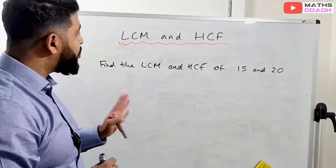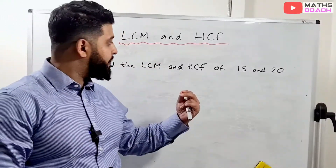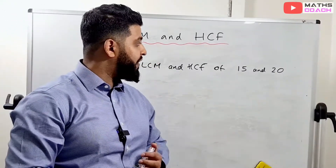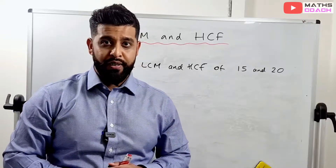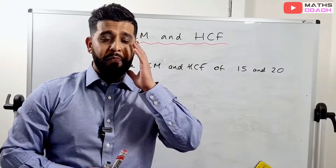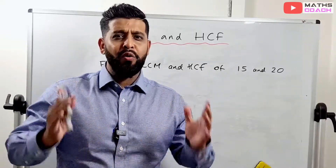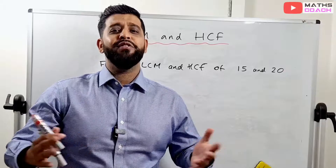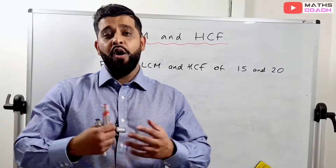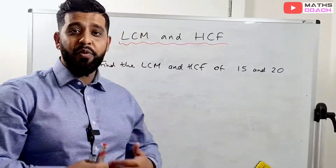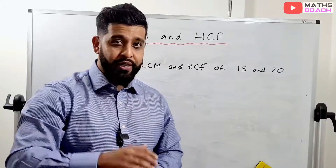In this question we are going to find the LCM, the lowest common multiple, and the highest common factor of 15 and 20. But you're probably thinking: you haven't reminded us what a multiple or a factor is. So I'm going to do that real quick.